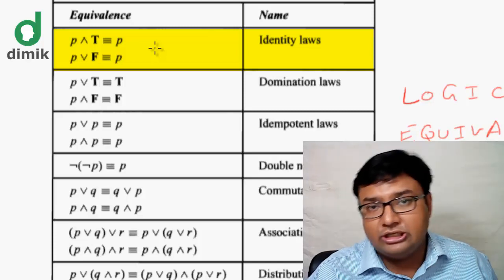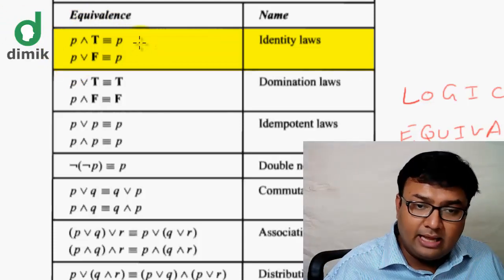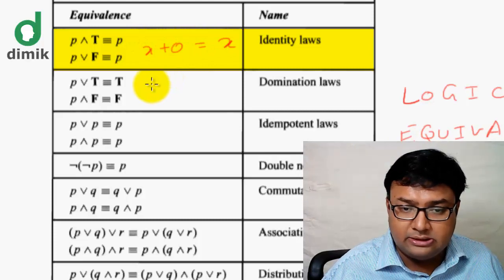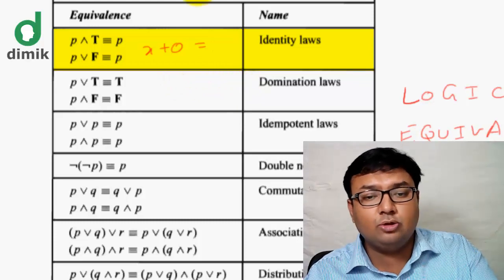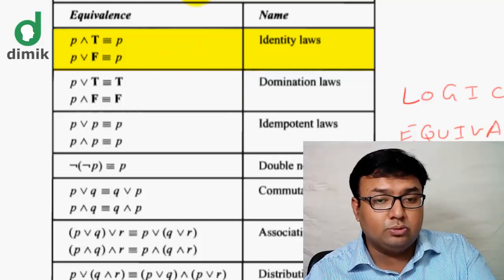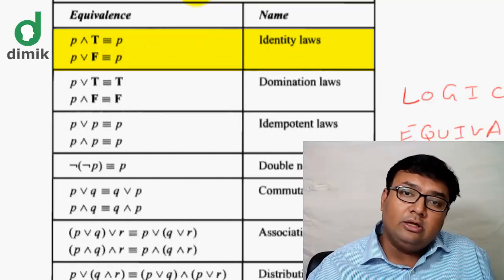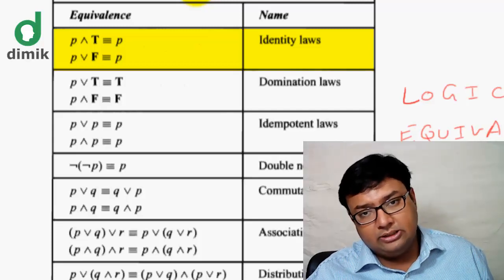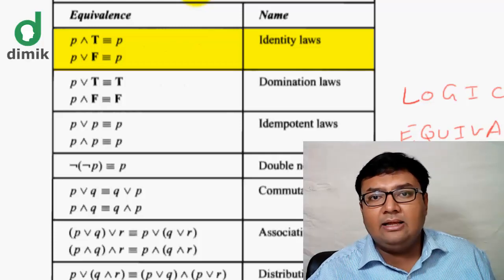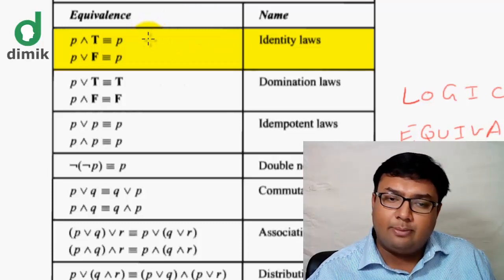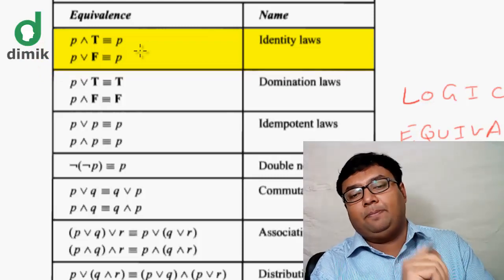The P AND T value equals the final value of P — this is called the Identity Law. Similarly, P OR false is equivalent to P: P AND false gives false when P is false, and the result follows P in all cases.